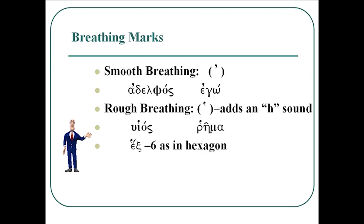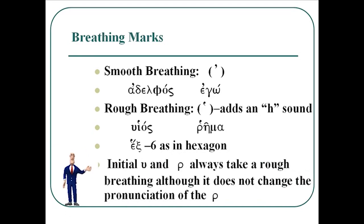Rhema — you'll notice it begins with a rho, but it also carries a rough breathing mark. Rho is one of the exceptions: when rho begins a word, it must carry a rough breathing mark. The rough breathing is seen on the Greek word hex, meaning 'six,' which comes into English as hexagon, a six-sided figure. It's interesting that modern Greek carries only one accent, the acute, and no breathing marks at all. The initial upsilon and rho always take a rough breathing, although it does not change the pronunciation of a rho-initial word — so it's rhema, not hrema.